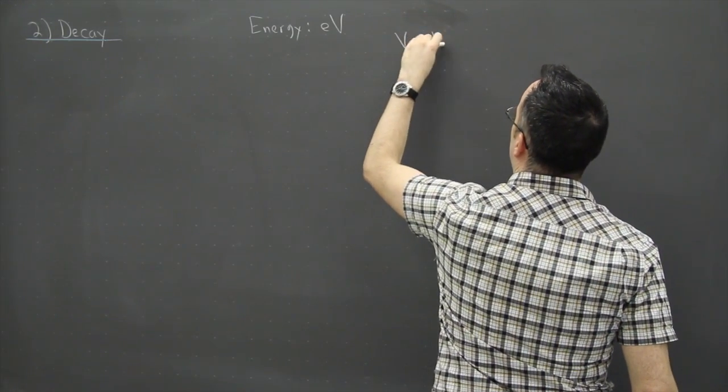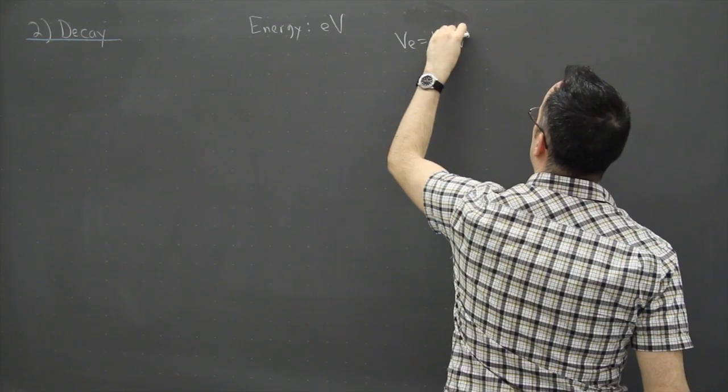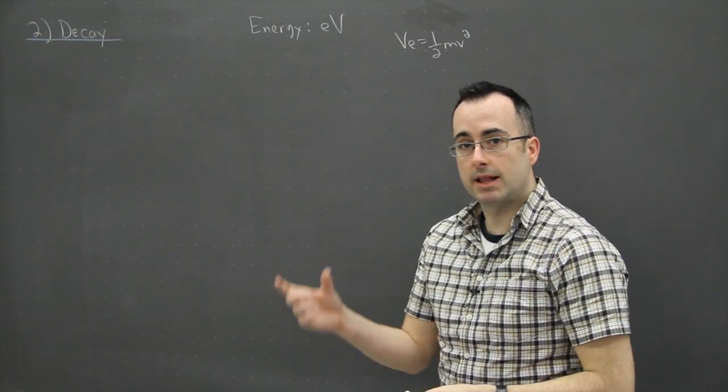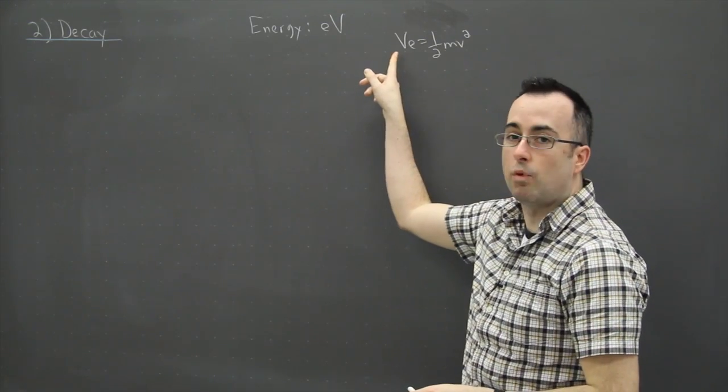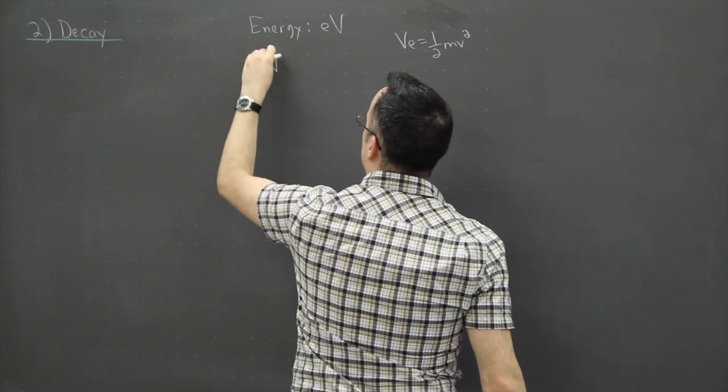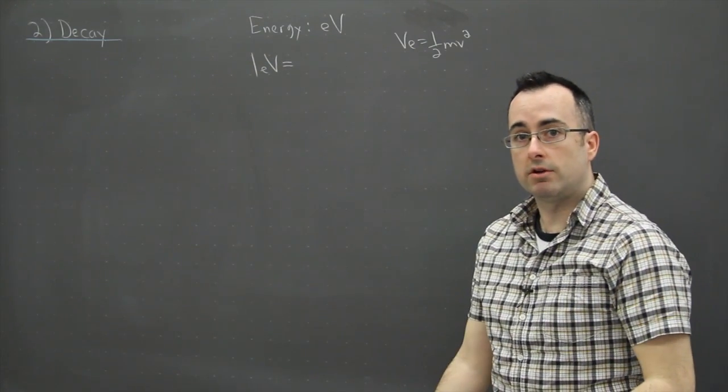So VE equals half mv squared and that told you the kinetic energy of an electron that's been accelerated through a potential difference of one volt. So that means that 1 eV of energy, it is a unit of energy.